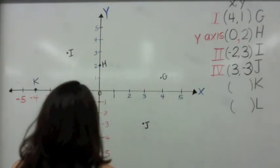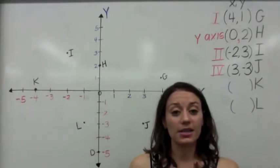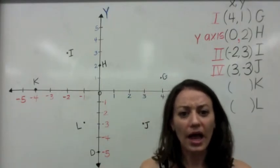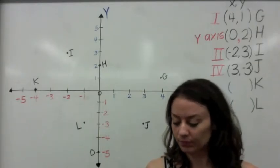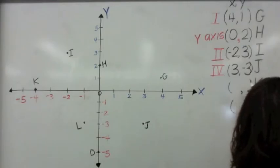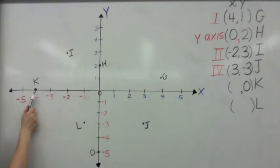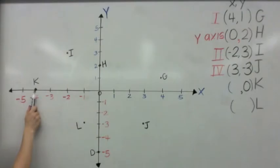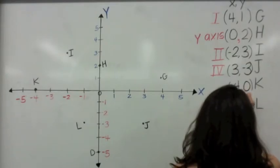Now let's look for K. Which axis can you find K on? It is on the x-axis. And if it's on the x-axis, y has to be 0. If we are at negative 4 on the x-axis, we don't go up or down. We stay right on the x-axis at x equals negative 4, so the ordered pair is (negative 4, 0).